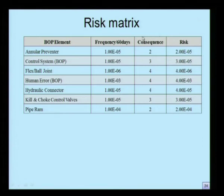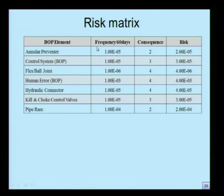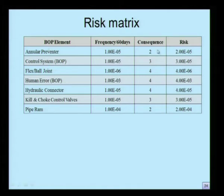Once this is done, we can estimate what we call a risk matrix. The risk matrix gives all the BOP elements in one column, the frequency with respect to one month in the next column, the consequence of that failure in the third column, and the estimate of risk based on frequency and consequence in the fourth column. The BOP elements discussed in this analysis include: annular preventer, control systems, ball joints, human error, hydraulic connector, kill and choke control valves, and pipe rams. The frequency of these failures can be rated on a scale, and consequence can be arrived at on a five-point scale. Ultimately, risk can be estimated as the product of consequence and frequency.